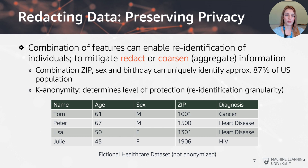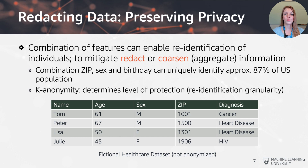Redacting or coarsening data relates to the responsible AI dimension of privacy preservation and security. A combination of features can actually enable re-identification of individuals if it's too specific. For example, if only one person in a data record has a specific age in a particular zip code with health records, that individual could potentially be re-identified. To prevent this, we want to redact or coarsen the data, aggregating information so no single individual can be uniquely identified.